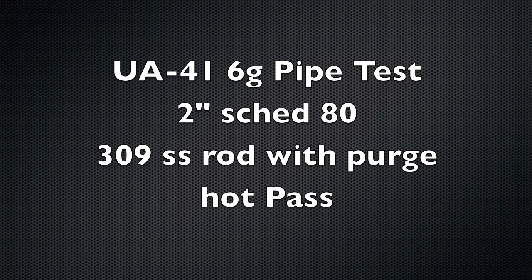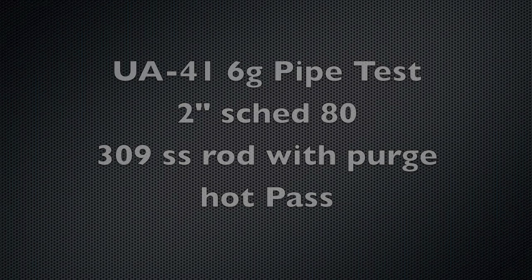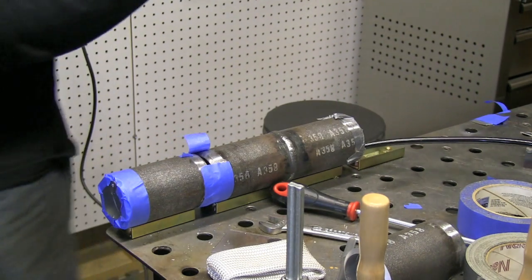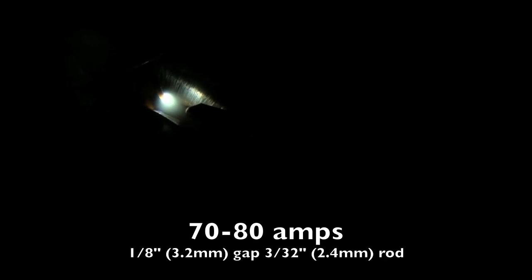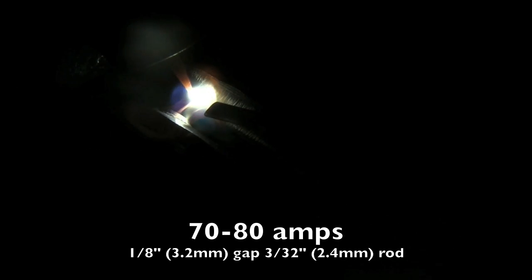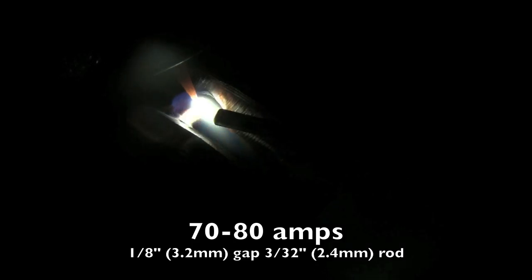All right, back to the topic at hand. This is the hot pass on the two-inch schedule 80 - it's also called a UA-41 6G pipe test. We're using 309 stainless with purge. And when you get done with the root pass, you don't want to turn off the purge. Now I'll do a little review here. We started off getting tack welds on this thing at 70 to 80 amps, just getting it to join. I'm using a 3/32" - that's 2.4 millimeter - 309 rod.